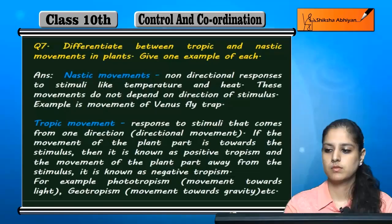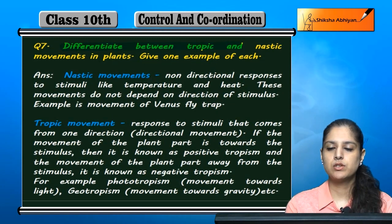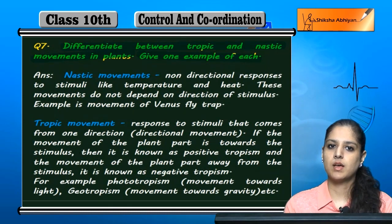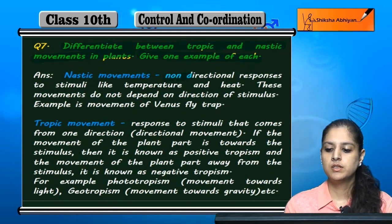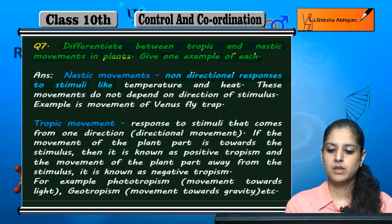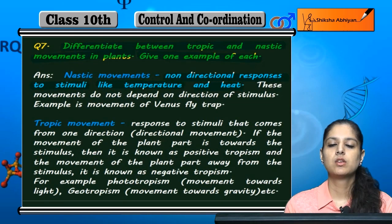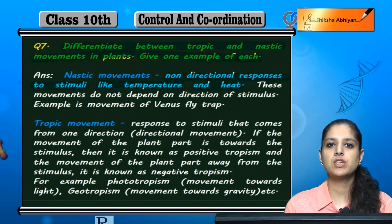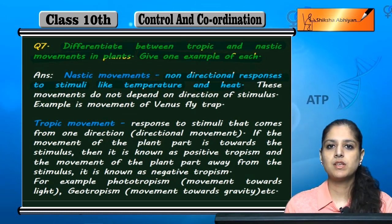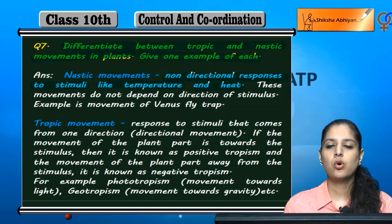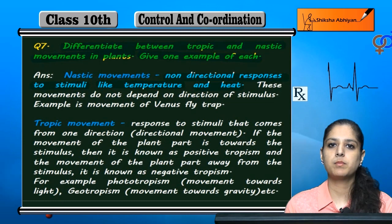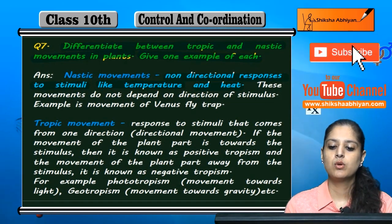Question number seven: differentiate between tropic and nastic movements in plants. First of all, nastic movements are non-directional responses to stimuli like temperature and heat. The response of plant parts is non-directional — any change of direction depends on the overall temperature or heat. The top of the plant reacts and responds, giving a nastic movement.